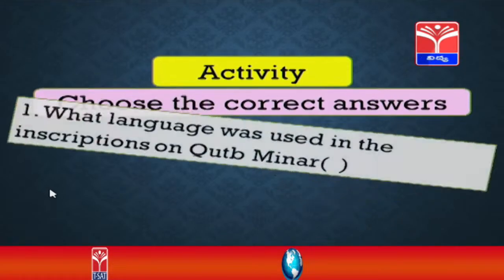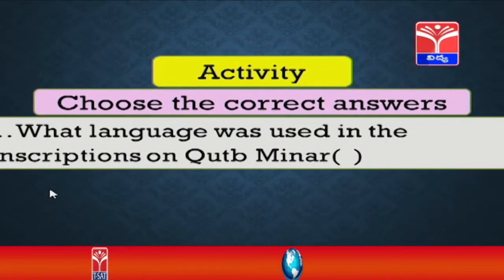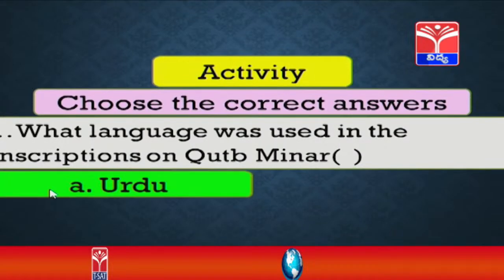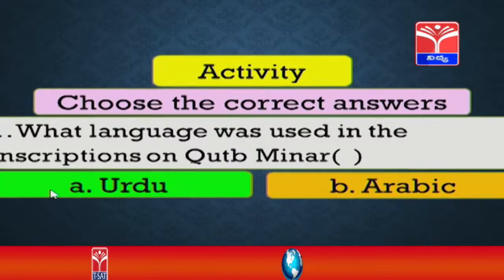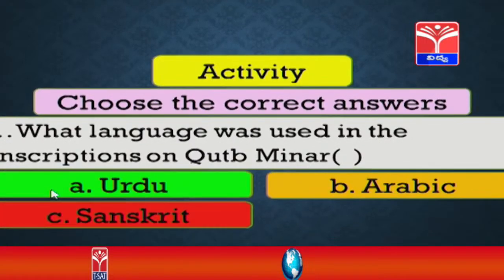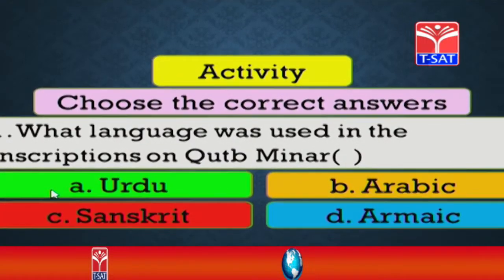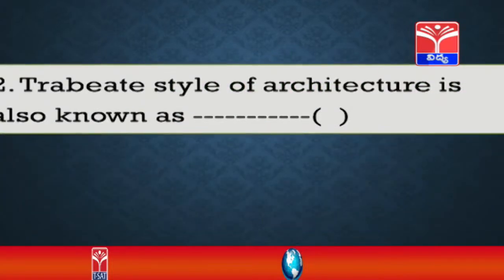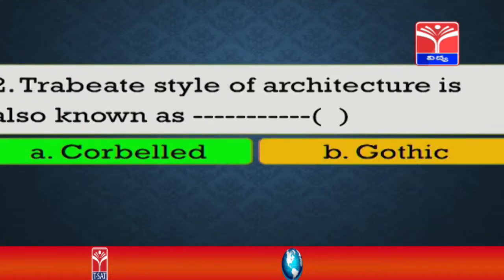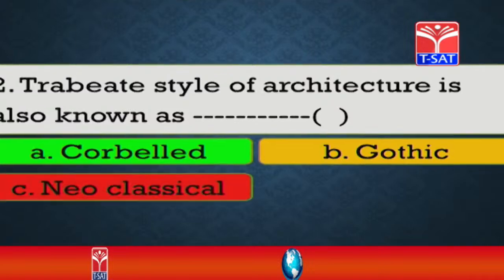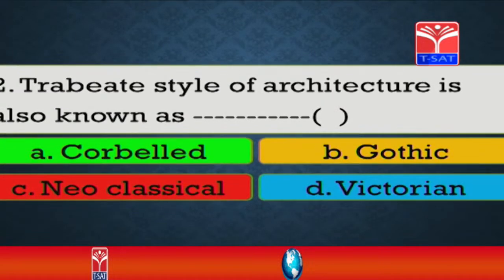A small activity: choose the correct answers. First, what language was used in the inscriptions on Qutub Minar? Option A: Urdu. Option B: Arabic. Option C: Sanskrit. Option D: Aramaic. Second, the trabeate style of architecture is also known as — A: Corbel, B: Gothic, C: Neo-classical, D: Victorian. Third, one of the following matches is not true — Option A: Kandarya Mahadeva temple at Kajuraho; Option B: Brihadeshwara temple at Tanjore; Option C: the Quwwat-ul-Islam mosque at Agra; Option D: Qutub Minar at Delhi.